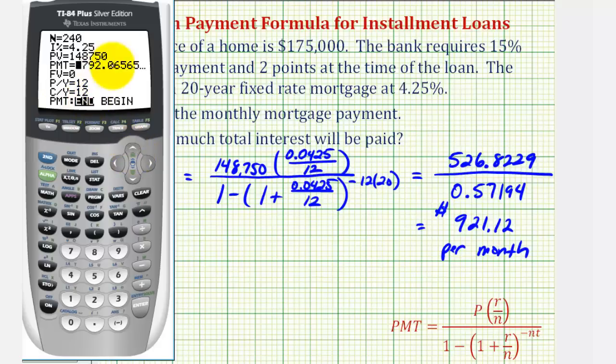So now we'll go back up to payment, clear this, and press alpha enter for solve. Notice how if we round this monthly payment to the nearest cent, it would be 921 dollars and 11 cents. And we came up with 921 dollars and 12 cents. That's because when we did it by hand, we actually rounded the numerator and denominator. I'm going to go ahead and use this monthly payment here because I realize that some of us might not have access to this type of program.